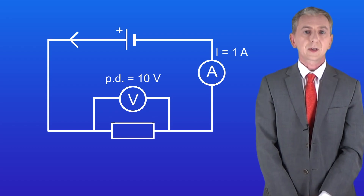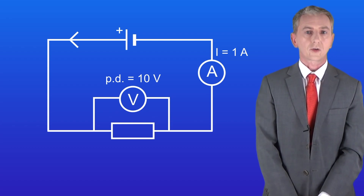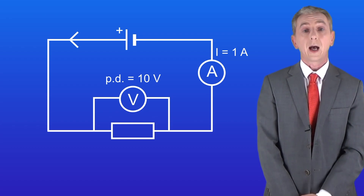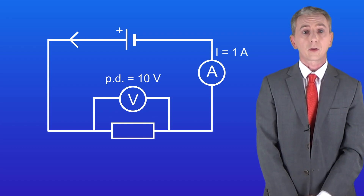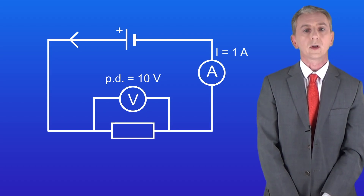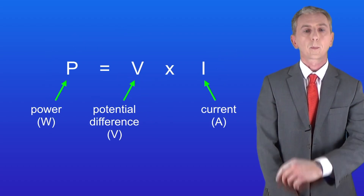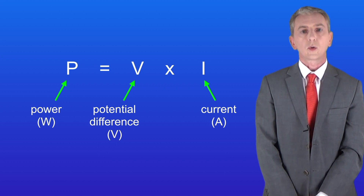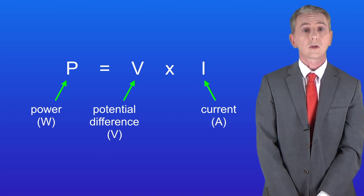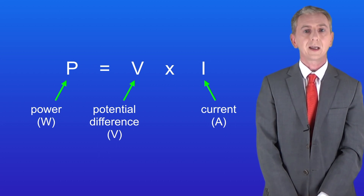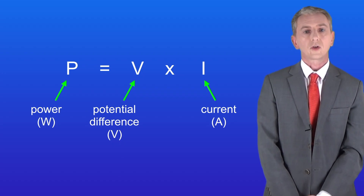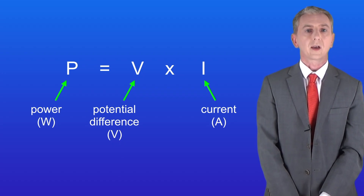If we know both the potential difference across a component and the current flowing through it, then we can calculate the power of the component using this equation. The power in watts equals the potential difference in volts multiplied by the current in amperes, and you need to learn this equation as you're not given it in the exam.